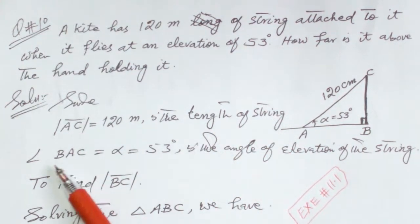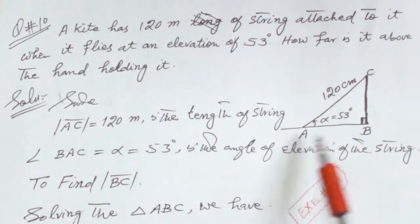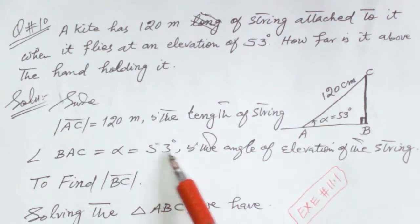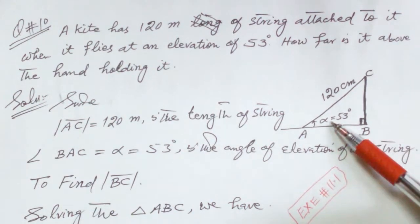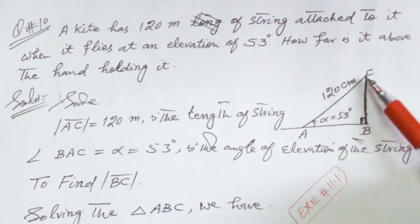Angle BAC, alpha, is equal to 53 degrees, the angle of elevation of the string. To find BC with respect to alpha, we connect BC to AC.